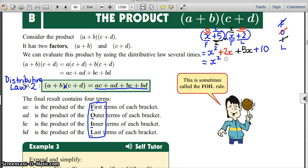X squared. There's no like terms. Seven X we've done. Plus ten. And that's as simple as we can get it.